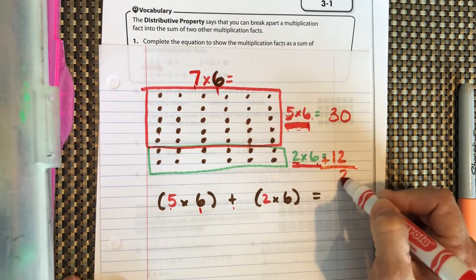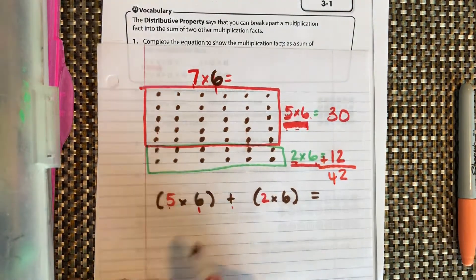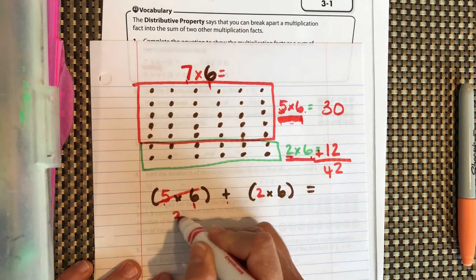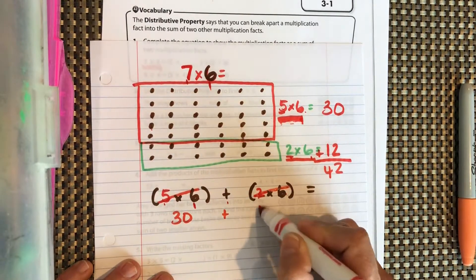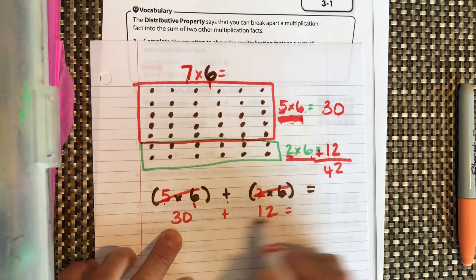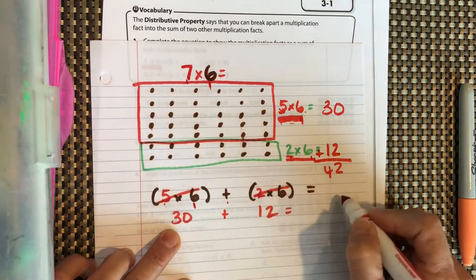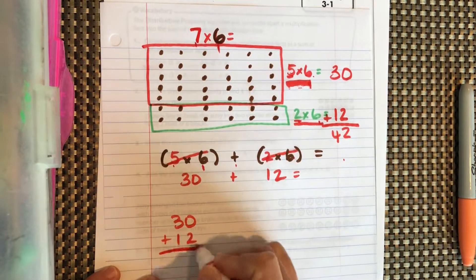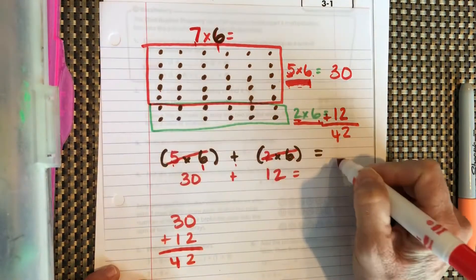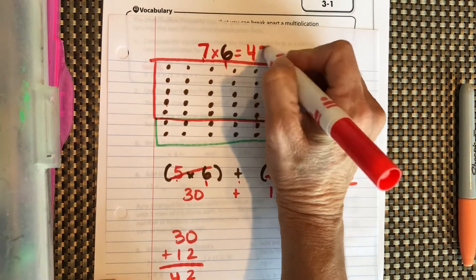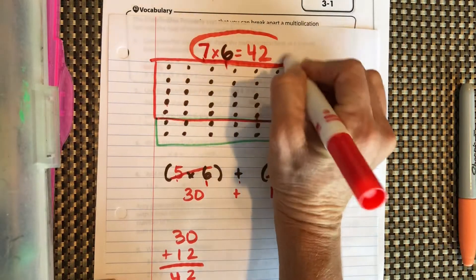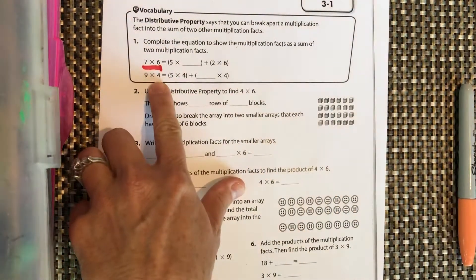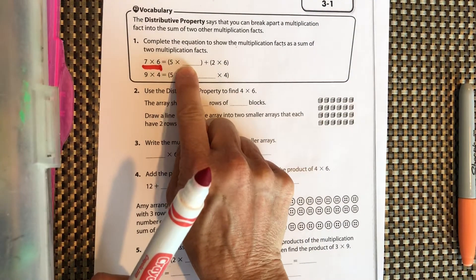Two groups of 6 is 12, and we add them together. Five groups of 6 is 30 and 2 groups of 6 is 12. If you can do that in your head, great; if not, do it off to the side: 30 plus 12 equals 42. Therefore, 7 times 6 equals 42.